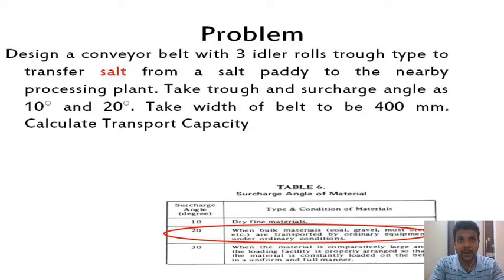In this case, we have salt paddy in which you need to transport the salt from the paddy to the source. We are given the surcharge angle and the trough angle. The width of the belt is also given to you. We need to find the transport capacity.